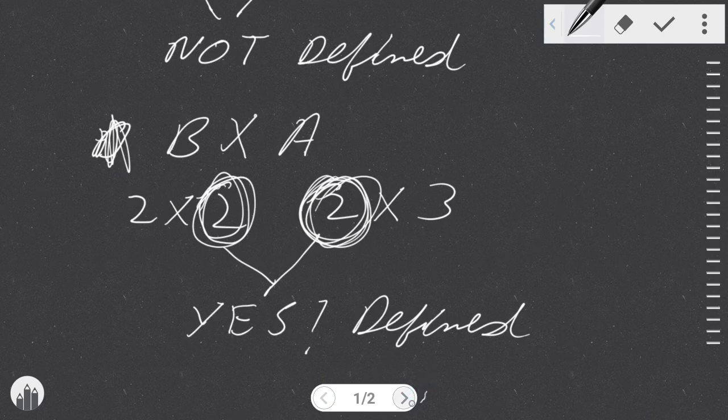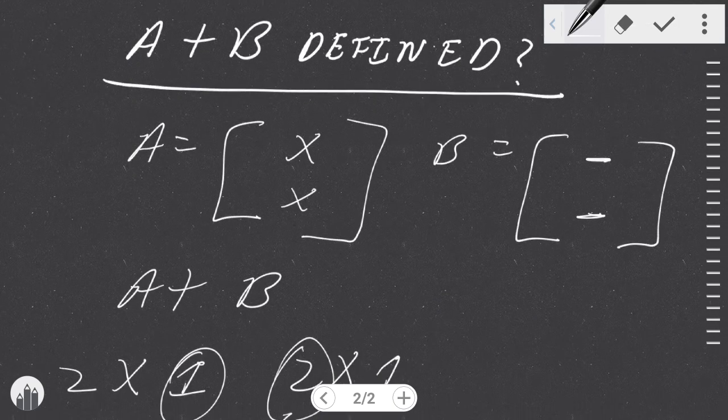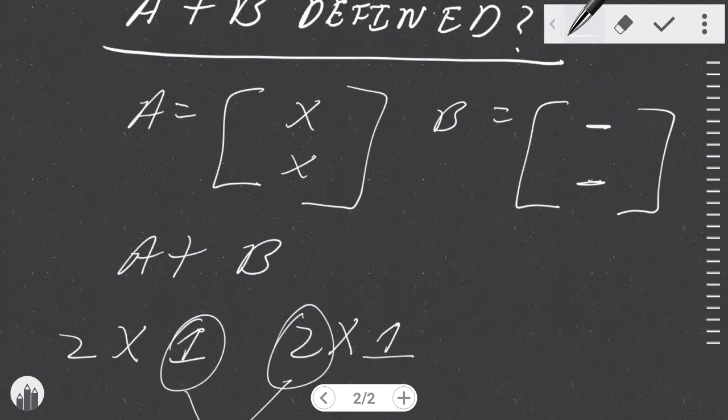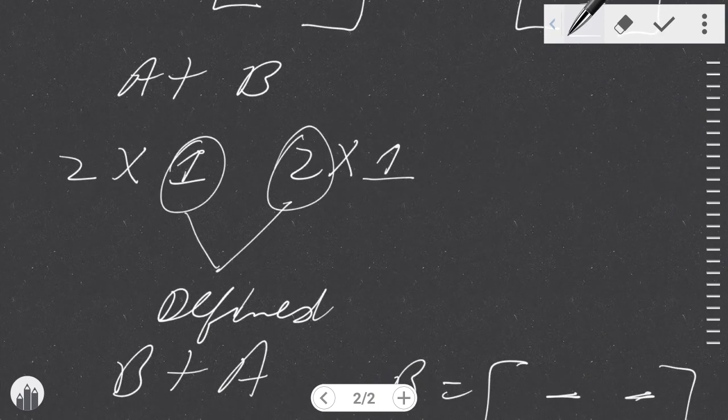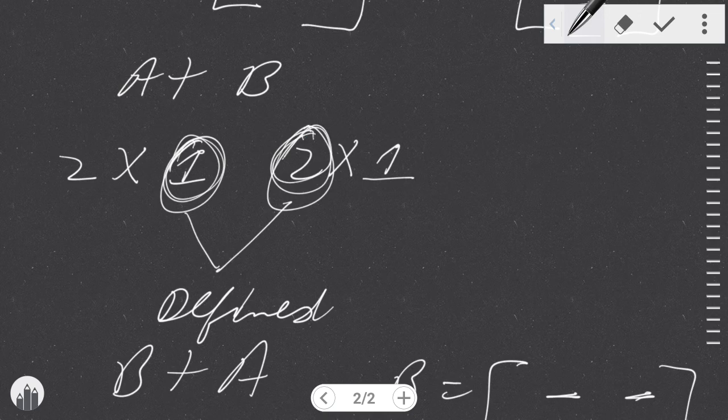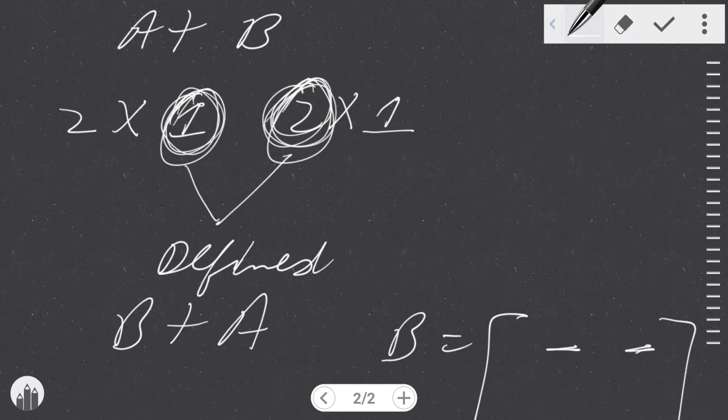But when it comes to addition, it is usually a lot more straightforward, as you just need to see whether the two matrices are in the same dimensions or not. Here we have A, which has two rows and one column, same with B. So even though these two values are not the same, they are still defined because they're operating within the same dimensions.